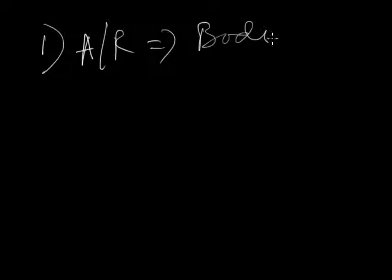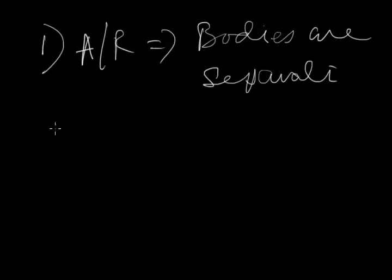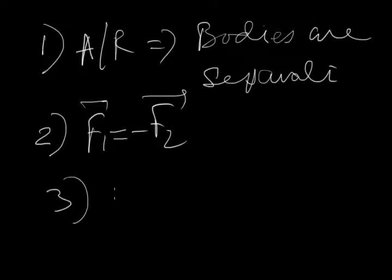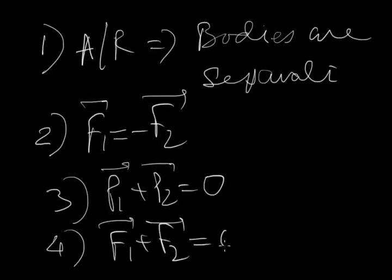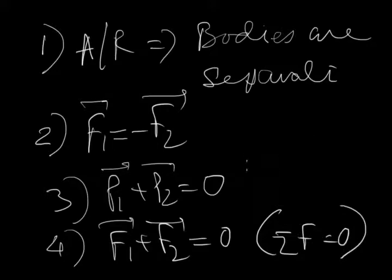So these are the things which should be discussed separately regarding the third law. First is that the action and reaction act on separate bodies. The second point is that the action and reaction are equal and opposite, so it is F1 equals minus F2. And the third thing is that they result to a net momentum 0 which we say is conservation of momentum. And finally they give that F1 plus F2 equals 0, which implies that the net force on the system is 0. So these are the four things that we remember from the third law. Thank you.